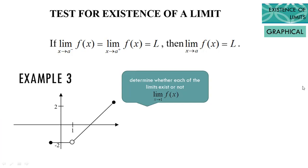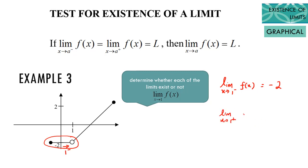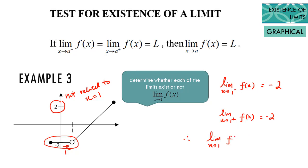The proper method to figure out the existence of a limit is the graphical method. From example three, we need to figure out the left-side limit from the diagram. From the diagram we found a horizontal line y equal to negative two when x approaches one from the left. At the same time, when the limit approaches one from the right, there is a linear function, but the value y equal to two is not the limit — because when approaching one from the right, the graph points to the empty circle, which is y equal to negative two as well. Therefore the limit is negative two.